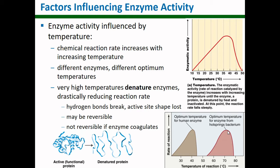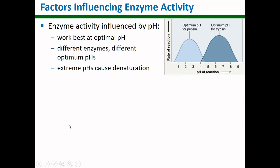Very high temperatures denature enzymes — they can break hydrogen bonds, cause the active site shape to be lost, or completely denature the protein. Sometimes this is reversible if the temperature cools back down, but not always. Enzymes also have specific pHs that they work really well at. If you get too far acidic or basic on your pH scale, you will have a loss of function. Extreme pHs can cause enzymes to be denatured.